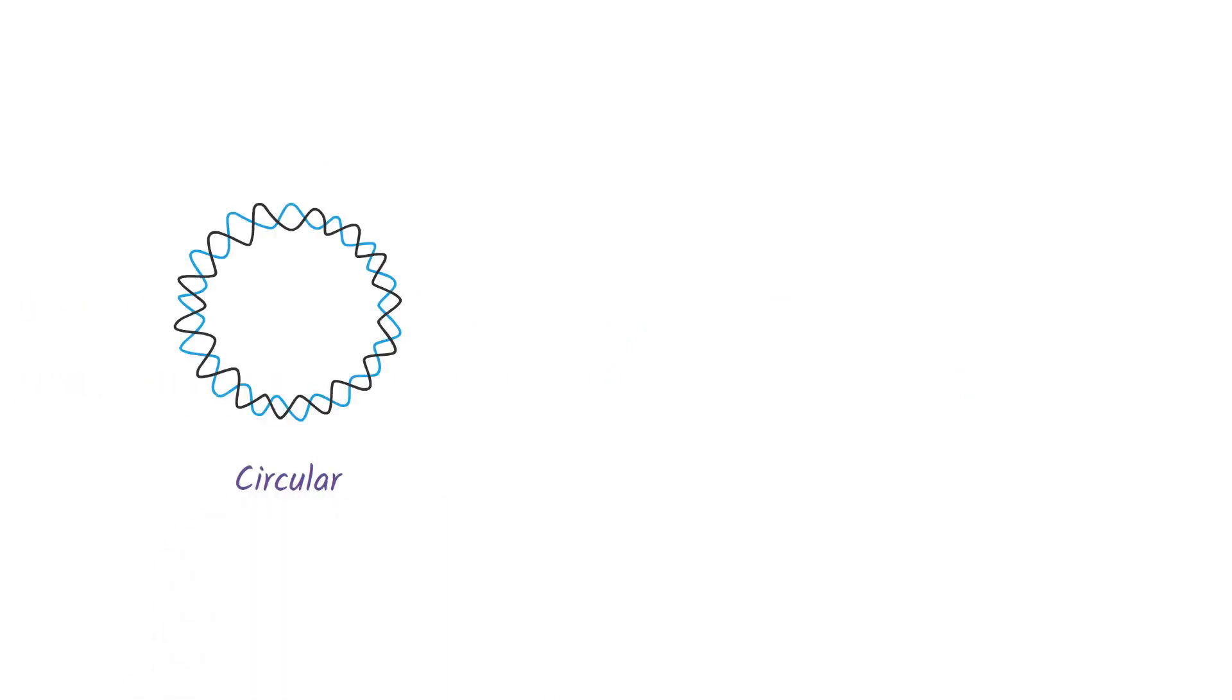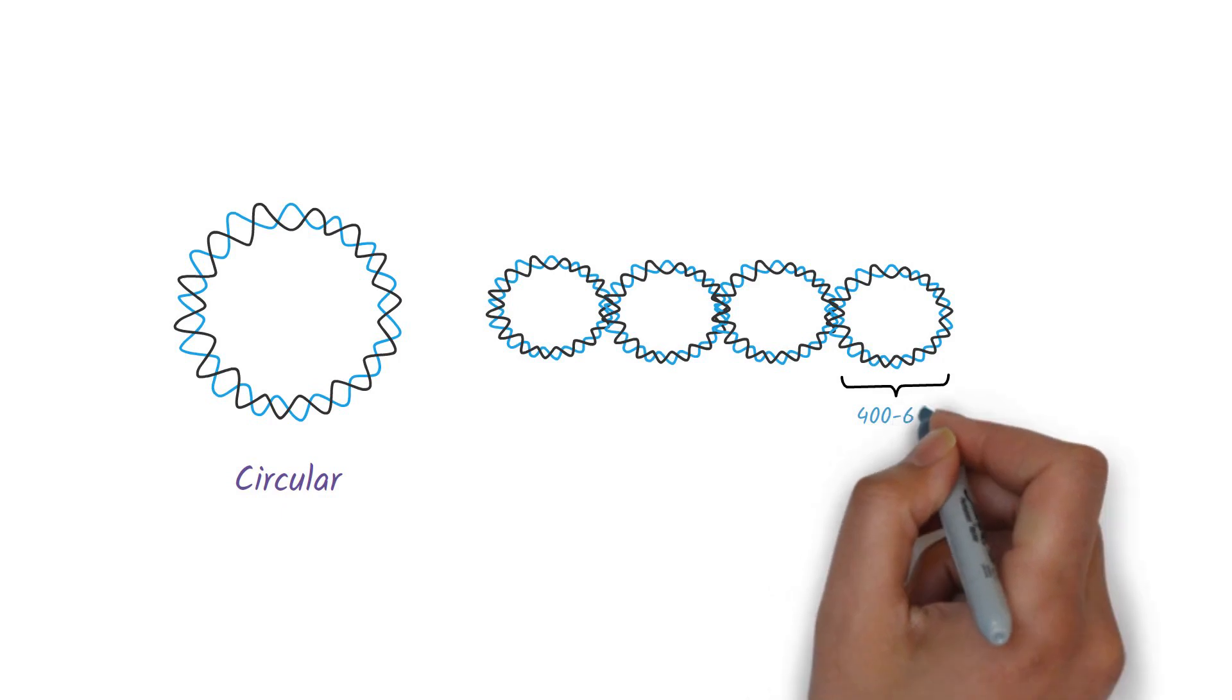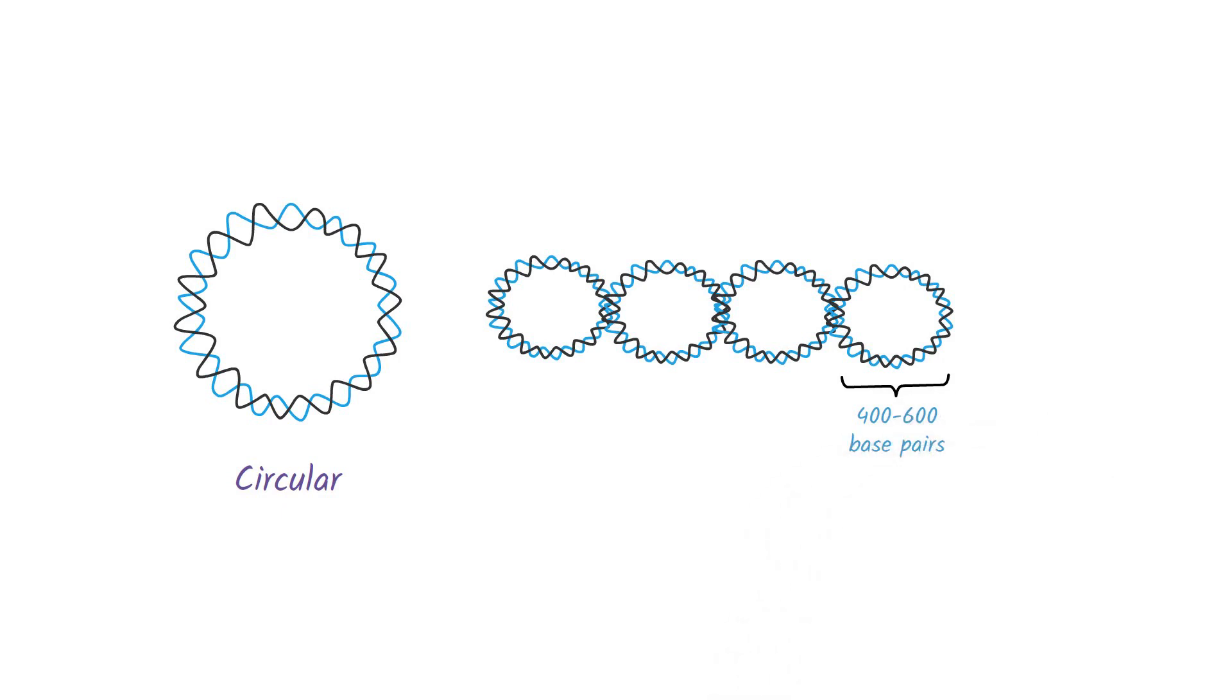Plasmids are circular in shape, but in resting state, the DNA is twisted at every 400 to 600 base pairs and forms a supercoiled structure. When one strand of DNA is nicked at specific location, these twists can be opened, making it circular.